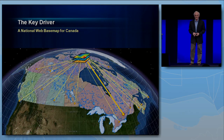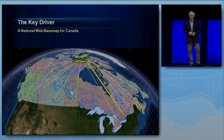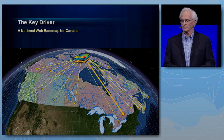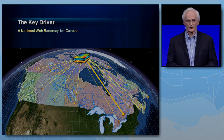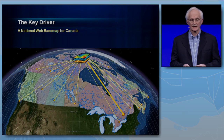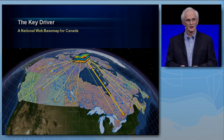The main driver for the community map of Canada was the need by the GIS user community in Canada for a standardized national web base map from authoritative sources. Canada's provinces and the federal government have been working together for the last 10 years on an SDI building a topographic data set called GeoBase. Natural Resources Canada, the country's national mapping agency, coordinates this.